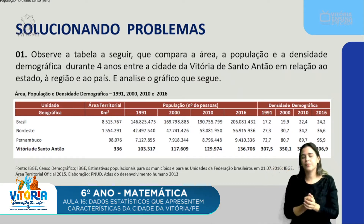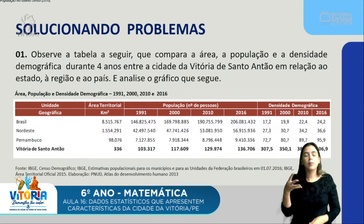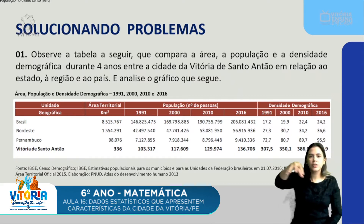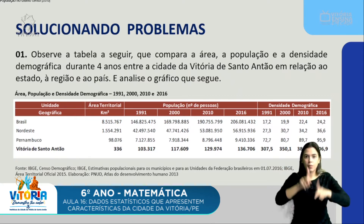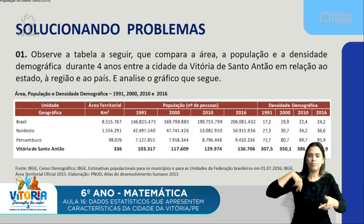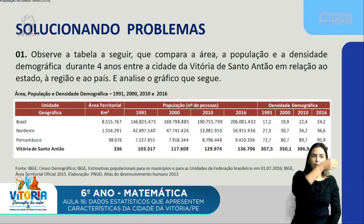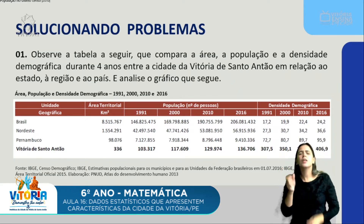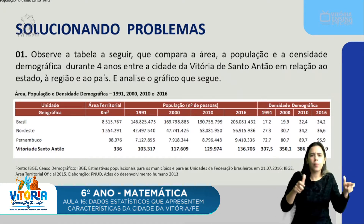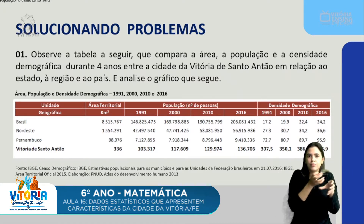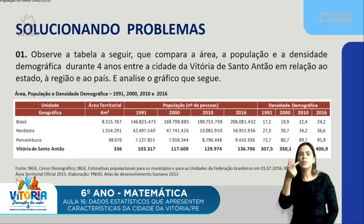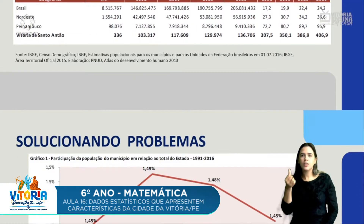Observando essa tabela, nós vemos que em todas as regiões houve um aumento da população ao longo desses anos, de 1991 até 2016. Em todos eles, o que justifica esse aumento nos valores da densidade demográfica — a densidade de 1991 até 2016 foi aumentando com o tempo.